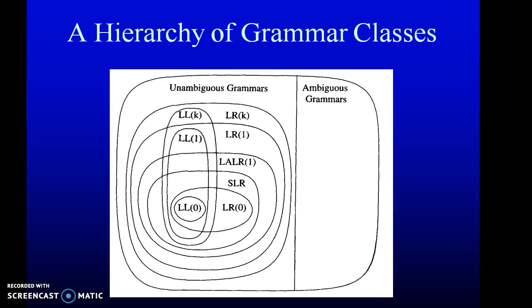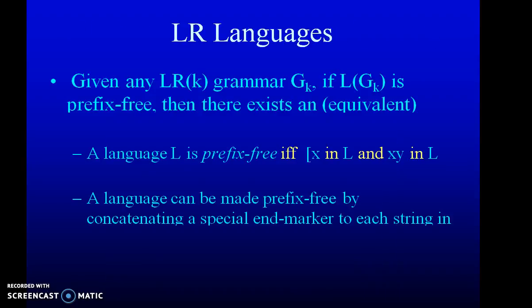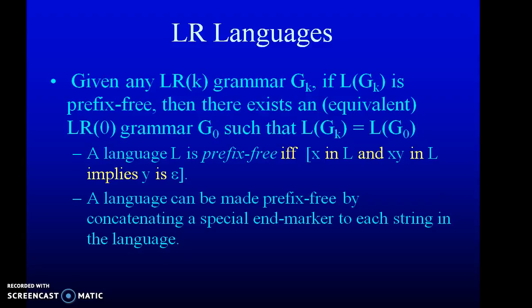Here you can see the hierarchy of grammar classes, including ambiguous and unambiguous grammars. In computer science we only use unambiguous grammars. The hierarchy includes LL(0), LL(1), and LL(K), as well as LR(0), LR(1), up to LR(K). All are interrelated — if you know LR(0), you can construct SLR, LALR, and CLR (canonical LR) parsers as well. Thank you.